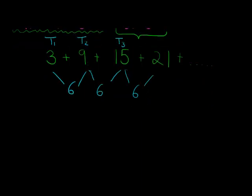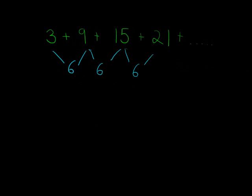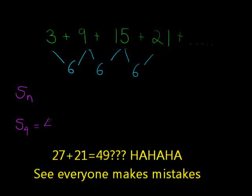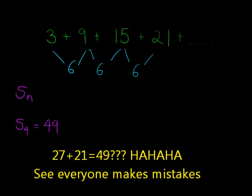The arithmetic series means I'm adding up the terms of the arithmetic sequence. The sum of the first n terms, S_n—let's say we have S_4—would be these four terms, which is exactly that. What is it? 9 and 3 is 12, and 15 is 27, and 21 is... 49. S_4 would be 49, the sum of the first four terms.